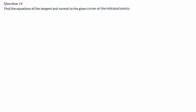Let's begin with question number 14, the last sub-question, that is question number 5. Find the equations of the tangent and normal to the given curves at the indicated points. Here the points are x = cos(t) and y = sin(t) and t = π/4. We are asked to find out the equation of the tangent and normal. Let's go through the algorithm first.